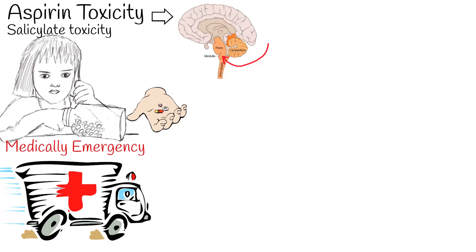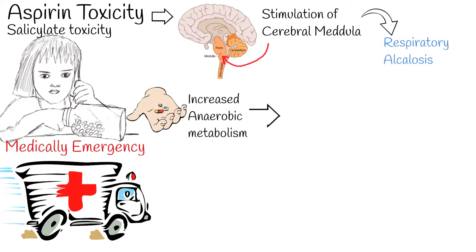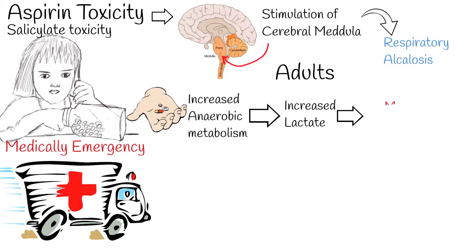Salicylate poisoning causes metabolic disorders. Direct stimulation of the cerebral medulla causes hyperventilation and respiratory alkalosis. It increases anaerobic metabolism and elevates lactate levels in the blood. The lactic acid and salicylate metabolites result in metabolic acidosis.